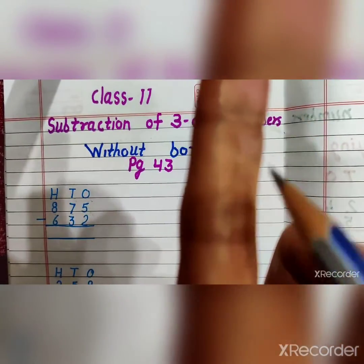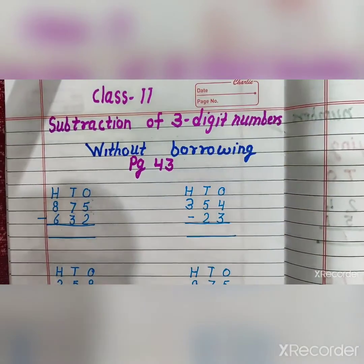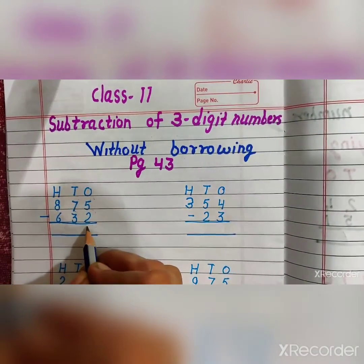1, 2, 3. You will get 3 fingers. 5 minus 2 is equal to 3.